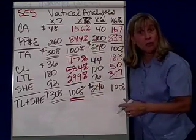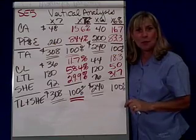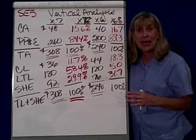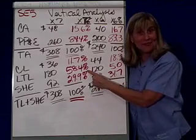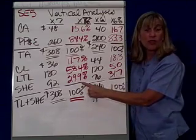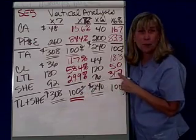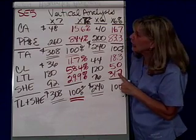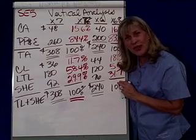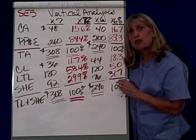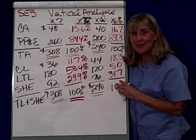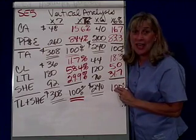Why would long-term liabilities grow? Because you bought more property, plant, and equipment, and you usually finance those long-term. You don't just go in and say 'I want to buy a car today, here's the cash' — many times you finance it. And stockholders' equity is not in an upward trend. So what we're looking at here is some desire to ask better questions. Notice that vertical analysis may not answer all your questions, but it certainly allows you to ask better ones.